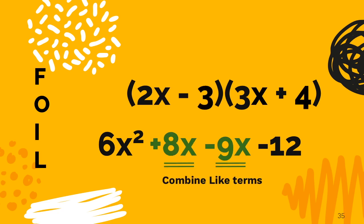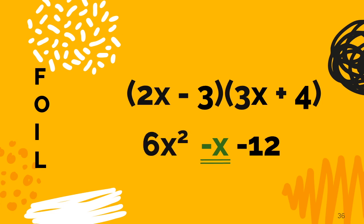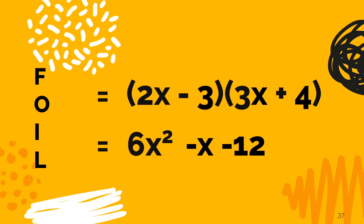The final step is to combine the like terms positive 8x and negative 9x, which gives you negative 1x, or simply negative x. So the final answer when you multiply 2x minus 3 times the binomial 3x plus 4 is the trinomial 6x squared minus x minus 12.